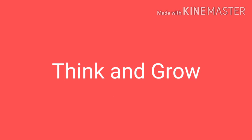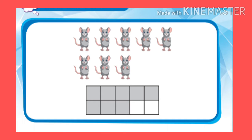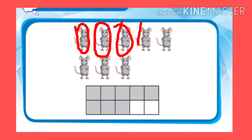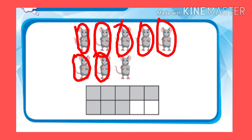Let's begin our lesson with Think and Grow! In this activity kids, we are going to count the object, then say the number, and then color the boxes to show how many. Are you now ready? Let's begin! How many mice are there? Let's count! 1, 2, 3, 4, 5, 6, 7, 8. There are 8 mice!